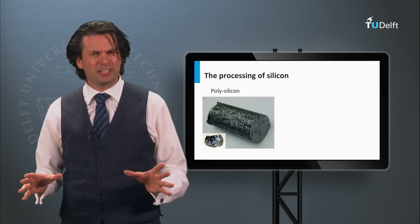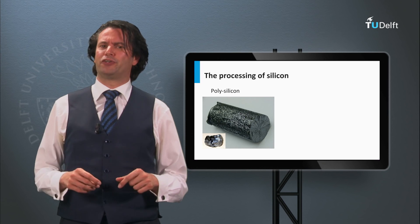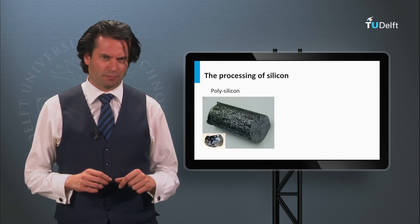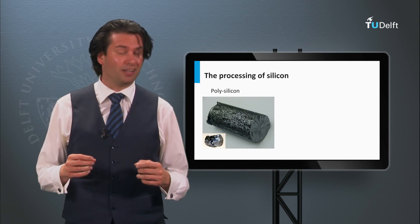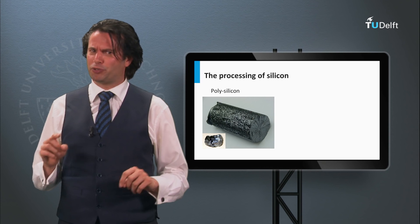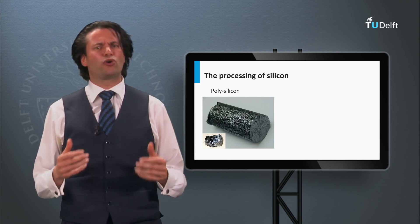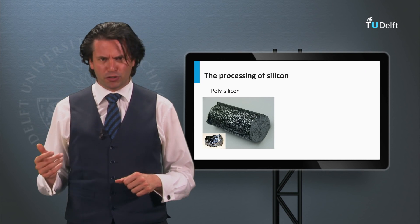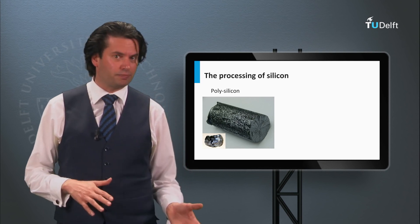The chemical vapor deposition furnace shown in the animation leads to polysilicon rods. This is the so-called Siemens process, which consumes a lot of energy. Another method is the production of polysilicon granules in so-called fluidized bed reactors, which operate at lower temperatures and consume much less energy.